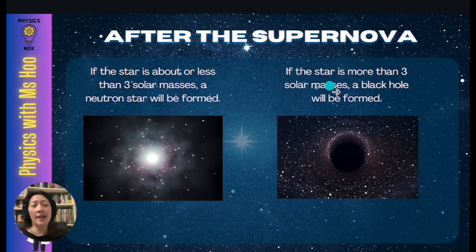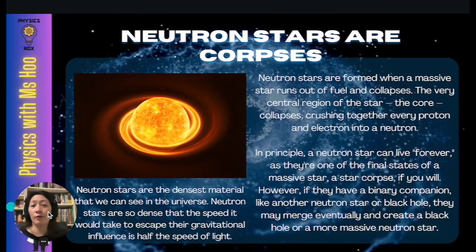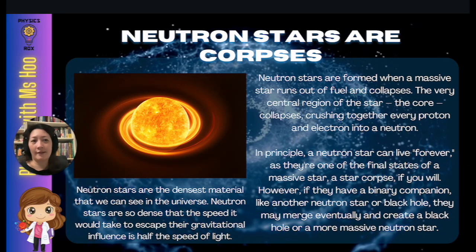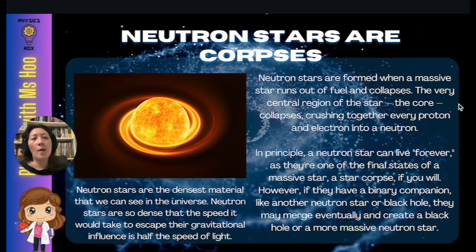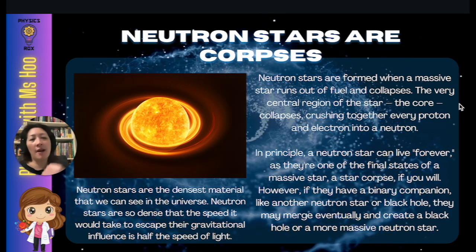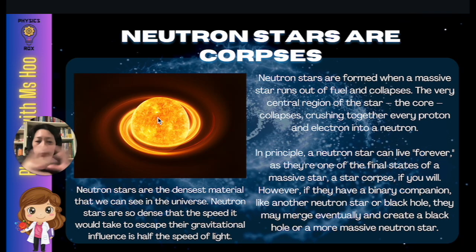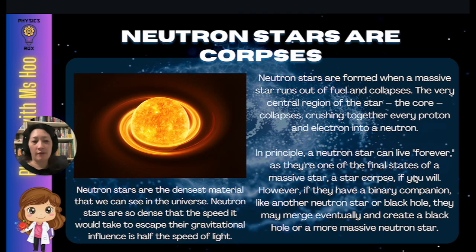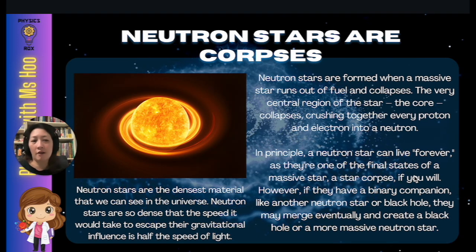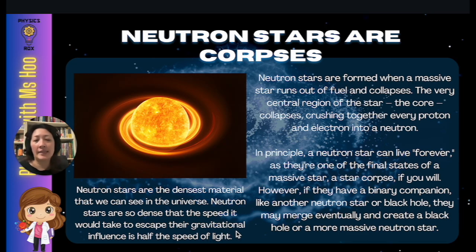Neutron stars are formed when a massive star runs out of fuel and collapses. The core collapses, crushing together every proton and electron into a neutron. In principle, a neutron star can live forever as one of the final states of a massive star — a star corpse, if you will. However, if they have a binary companion like another neutron star or a black hole, they may merge and create a black hole or a more massive neutron star. Neutron stars are the densest material we can see in the universe — so dense that the escape velocity from their gravitational influence is half the speed of light.